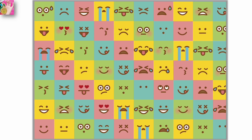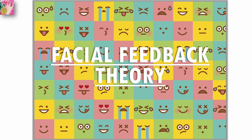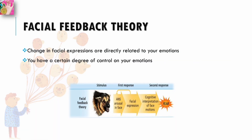The facial feedback theory states that changes in facial expressions are directly related to our emotions, and we have a certain degree of control on our emotions — just because of facial expressions. What the facial feedback theory says is that we have control on our emotions because of the way we make our facial expressions and the way we change our face. If you want to have a positive emotion, simply smile, and then you will have a positive and happy emotion. You have a certain degree of control on your emotions.